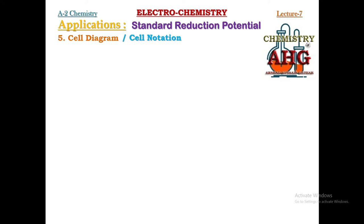Whenever we write down a cell diagram or cell notation, there is a general description to keep in mind. The anode half-cell, where oxidation takes place, is placed on the left-hand side. The cathode half-cell is placed on the right-hand side. Both half-cells are connected internally by a salt bridge, which we denote using a double vertical line.